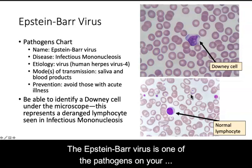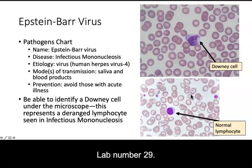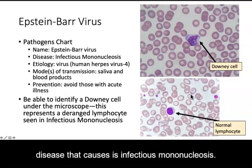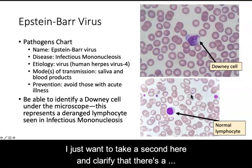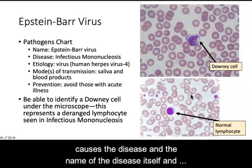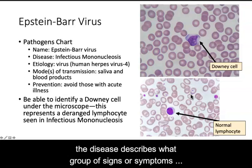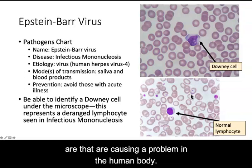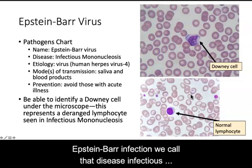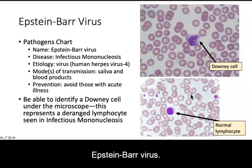The Epstein-Barr virus is one of the pathogens on your pathogen chart. So make sure that you go to your pathogen chart in your lab manual — that's lab number 29 — and fill out the information for the Epstein-Barr virus. The disease it causes is infectious mononucleosis. I just want to clarify that there's a difference between what we call the organism or virus that causes a disease and the name of the disease itself. The disease describes the group of signs or symptoms causing a problem in the human body, so when people have the signs or symptoms of this Epstein-Barr infection, we call that disease infectious mononucleosis.